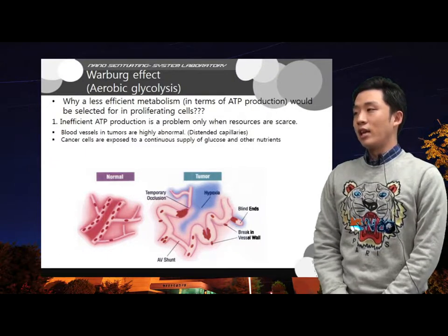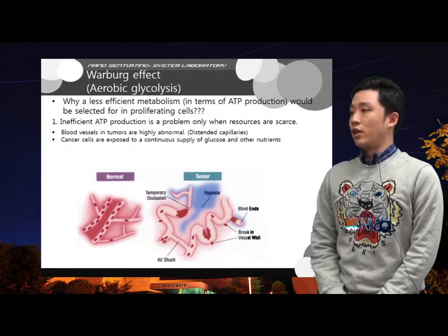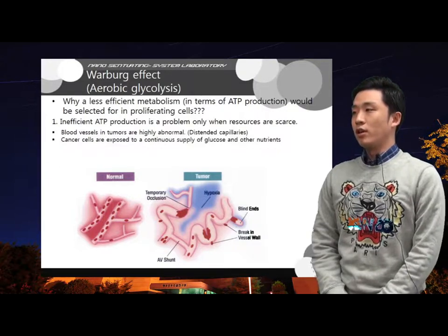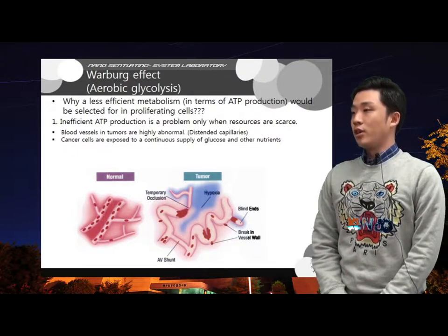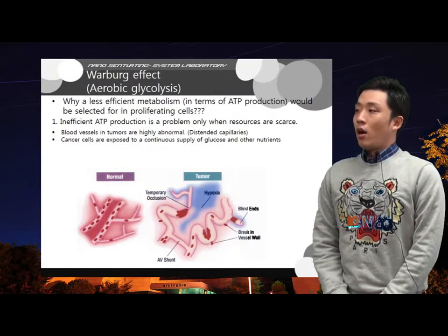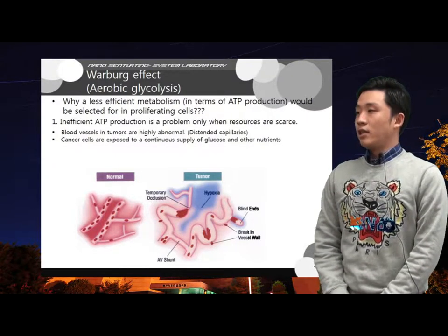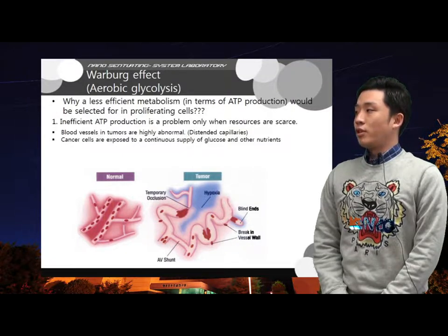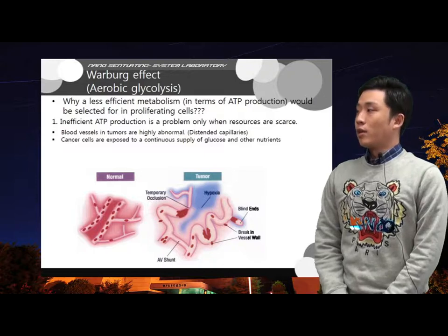This is not the case for proliferating mammalian cells, which are exposed to a continual supply of glucose and other nutrients in circulating blood. Also, for tumor, capillaries are distended and by angiogenesis, more nutrients are provided.